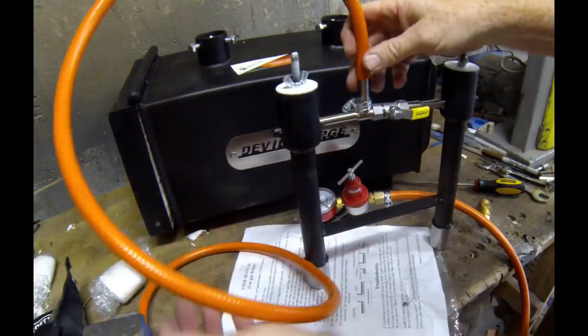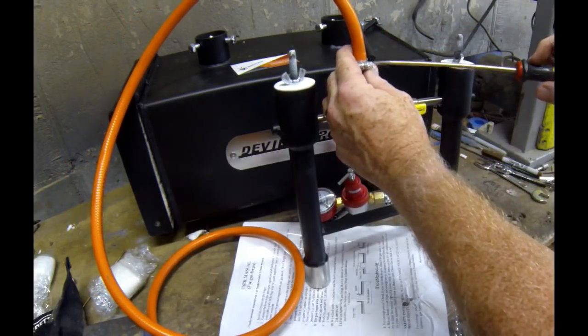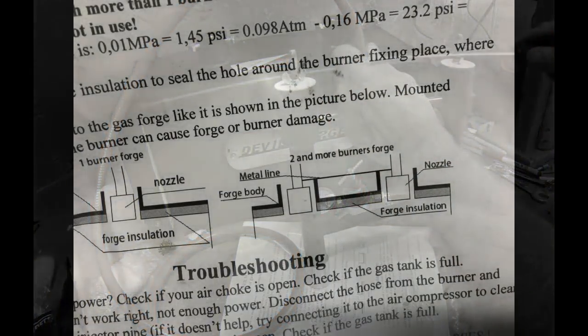And on that assembly, if you take a look, there's also a valve. That's to turn one burner off. So you can use this thing either one burner on or two burners on.